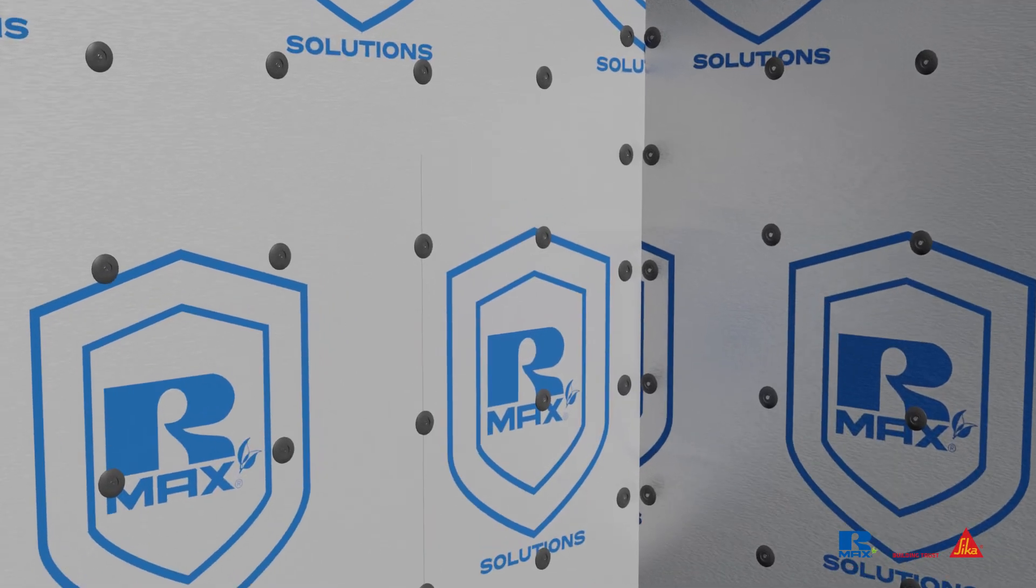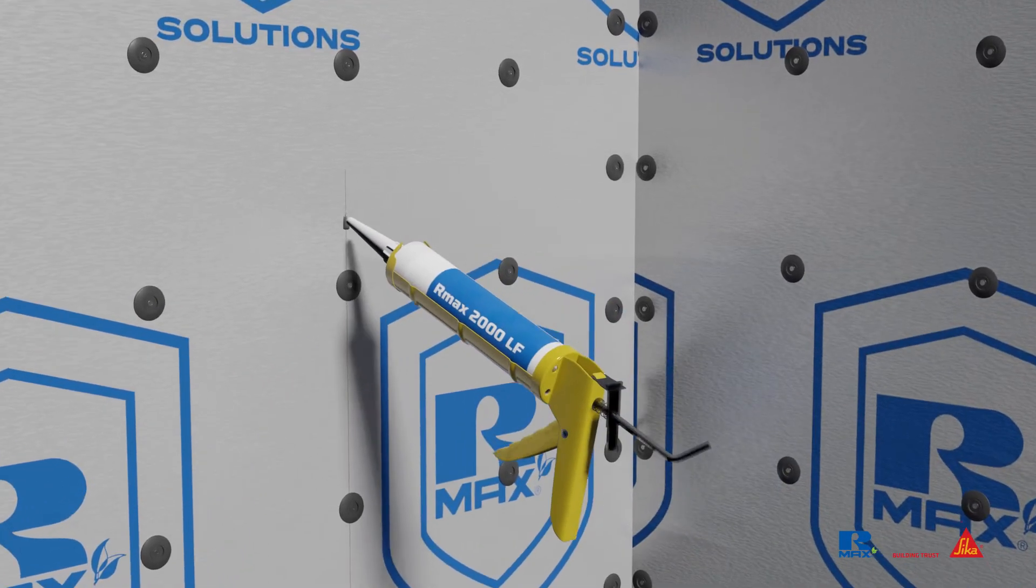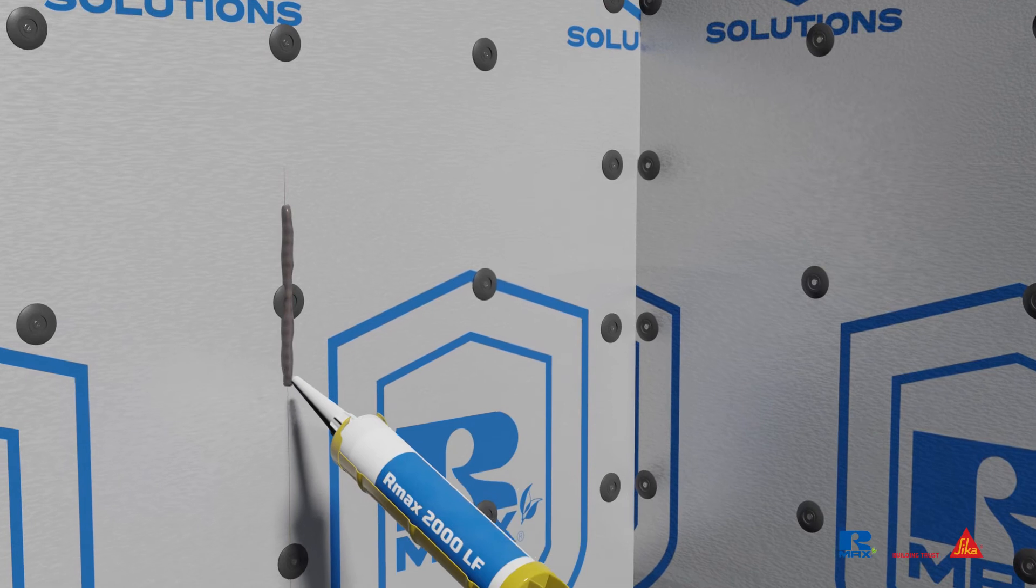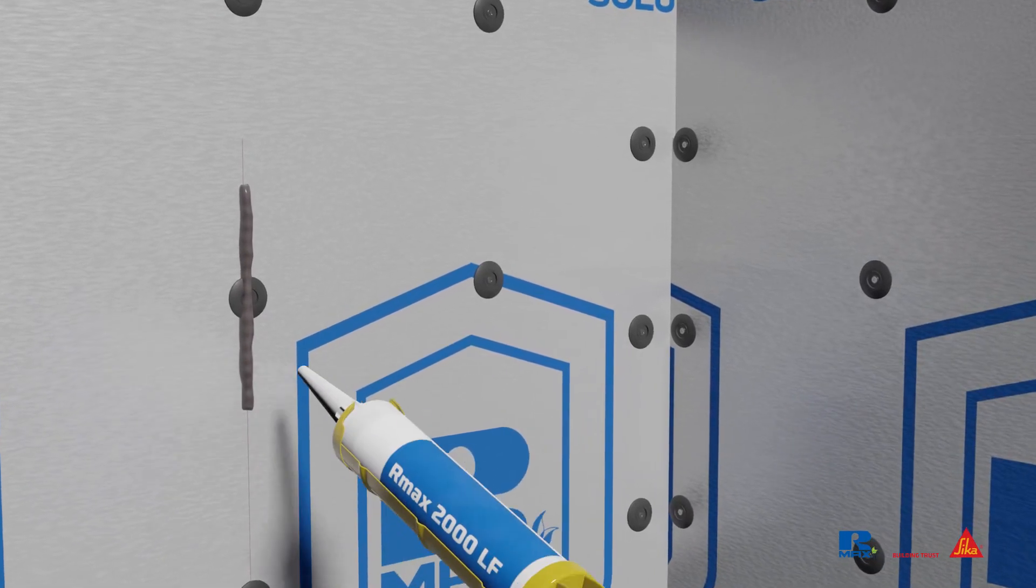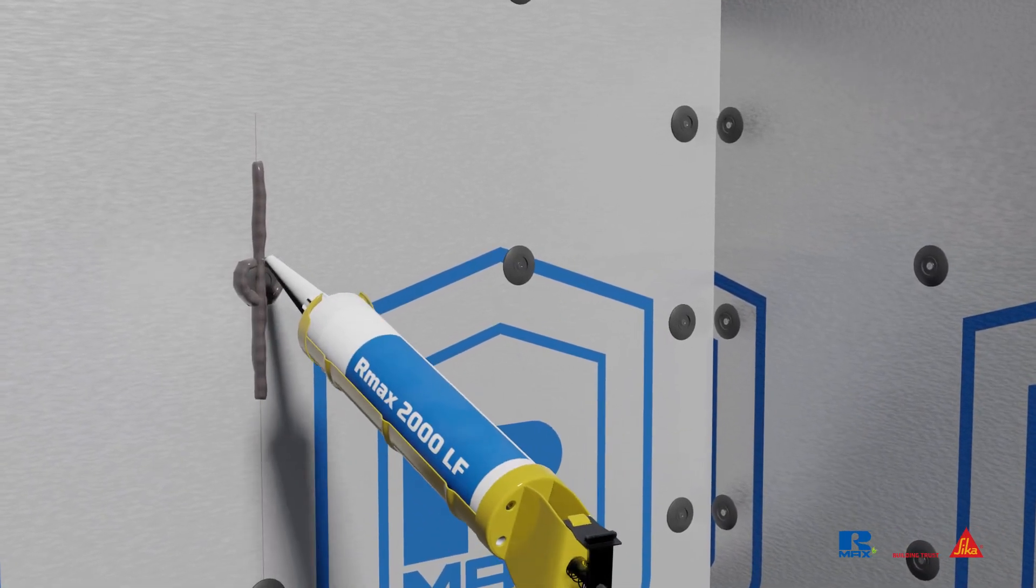Apply a bead of sealant centered along the joint starting above the washer, over the center of the washer and beyond by a couple of inches. Then add a bead around the perimeter of the washer.